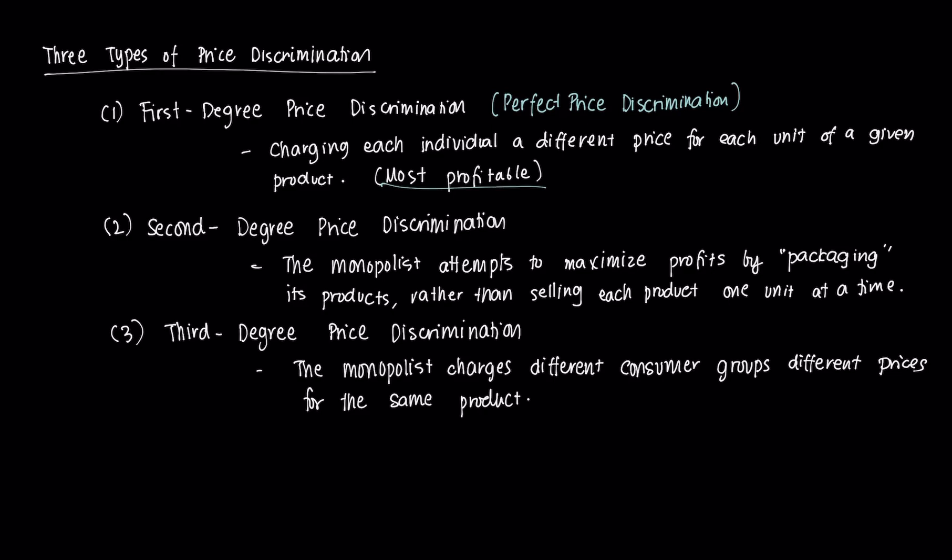The second one is called second-degree price discrimination. Essentially, the monopolist will try to maximize profit by packaging its products rather than selling each product a unit at a time, so it's going to do it in bundles.